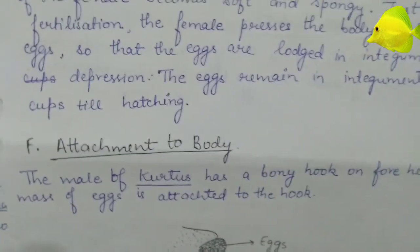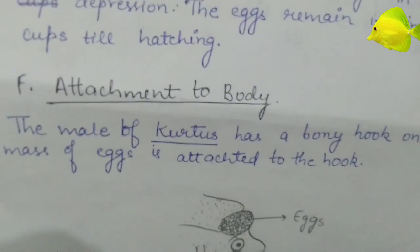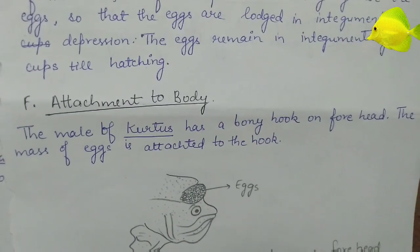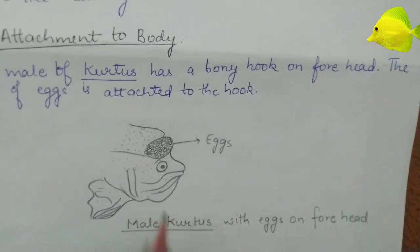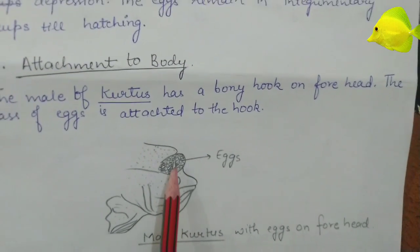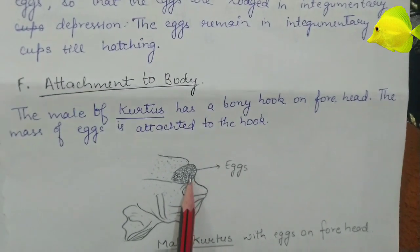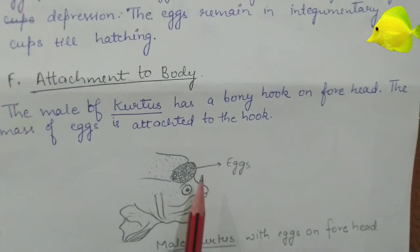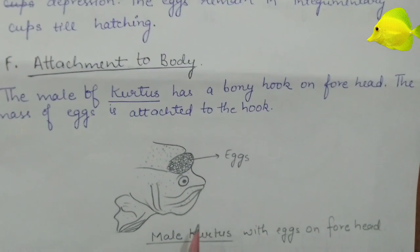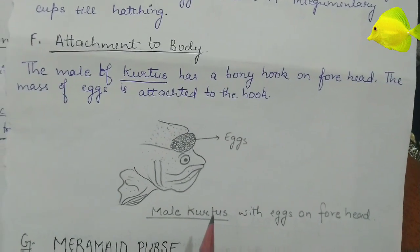The next method of parental care is attachment to body. Here the male of Kurtus has a bony hook on the forehead. A mass of eggs is attached to this hook, so the male carries and protects the eggs. This is another method of parental care — attachment to body — where the eggs are kept away from predators.